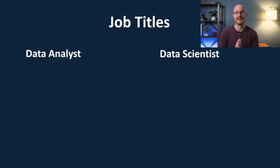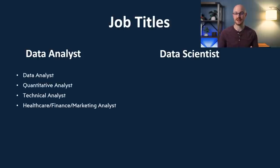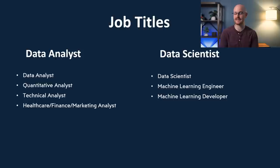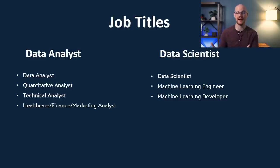Now let's take a look at job titles for a data analyst and a data scientist. For data analysts, the most common is just 'data analyst,' but you'll also see quantitative analyst, technical analyst, and domain-specific titles like healthcare analyst, finance analyst, and marketing analyst — just insert your domain and put 'analyst' behind it. For data scientists, you have of course 'data scientist' (which can be data scientist I, II, III, same as data analyst I, II, III), as well as machine learning engineer and machine learning developer.